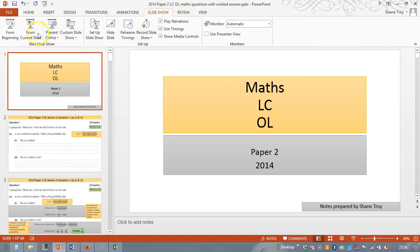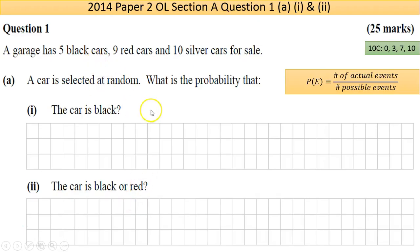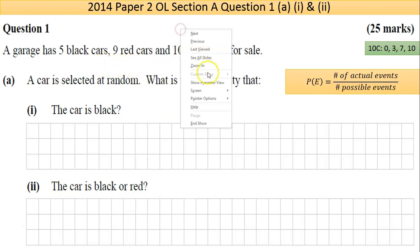Hello and welcome to question 1, paper 2, 2014, the Leaving Certificate Ordinary Level. As usual, I suggest you take a pause and have a go. This question is probability, so it can be very tricky.